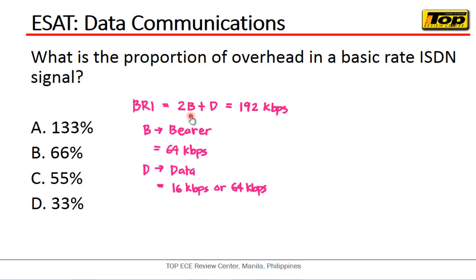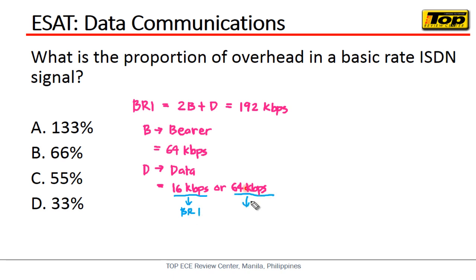Now if you're wondering what B is, that is the bearer channel and it has a bit rate of 64 kbps. And D — we know that — is the data channel, and that is 16 kbps or 64 kbps. The 16 kbps is used whenever you are using BRI, and 64 kbps is used when we are using PRI, which stands for primary rate interface. And this is the basic rate interface.